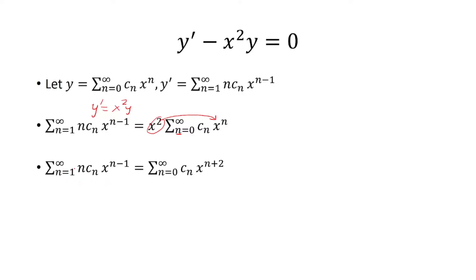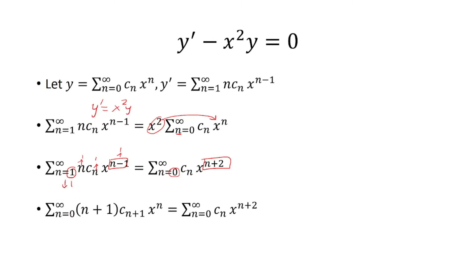The problem is that the y prime sum starts at n equals 1, the y sum starts at n equals 0, the exponent on y prime is n minus 1, and on x squared times y it's n plus 2. Ideally you want things to start at x to the n with n equals 0. To bring the index from 1 down to 0, decrease by 1, you increase the n's inside by 1. So we get n equals 0 and n plus 1 times c sub n plus 1 times x to the n.